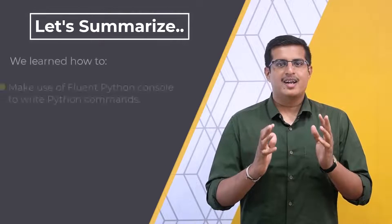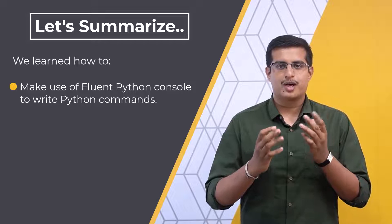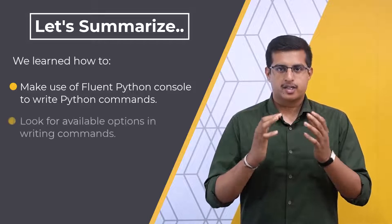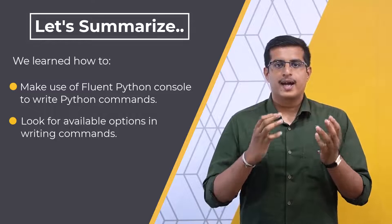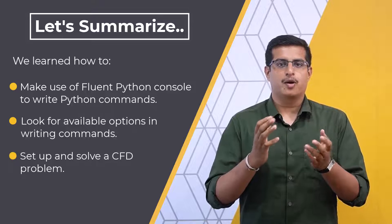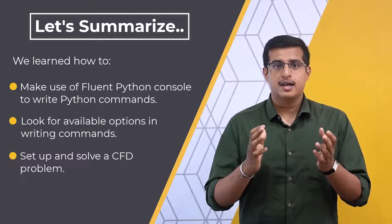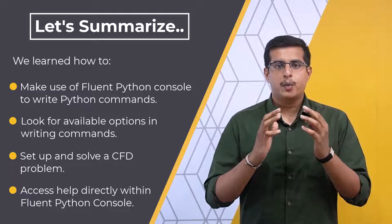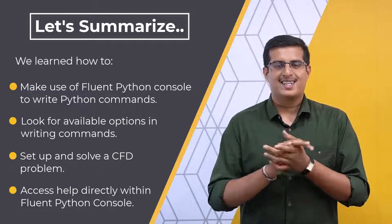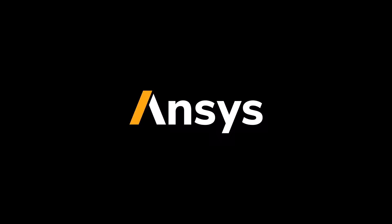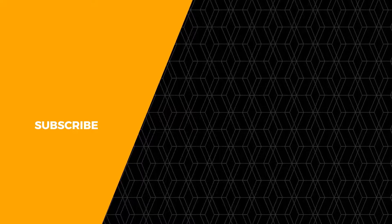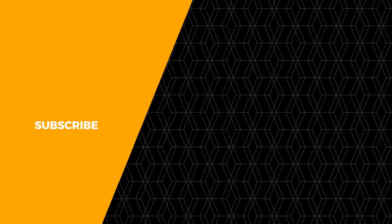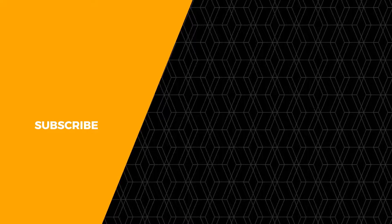To summarize, we learned how to make use of Fluent Python console to write Python commands. We explored how to look for available options in writing commands with the help of a demo problem, and learned how to set up and solve a CFD problem. Lastly, we learned how to access help directly within Fluent Python console. With that, let's wrap it up. Thank you.